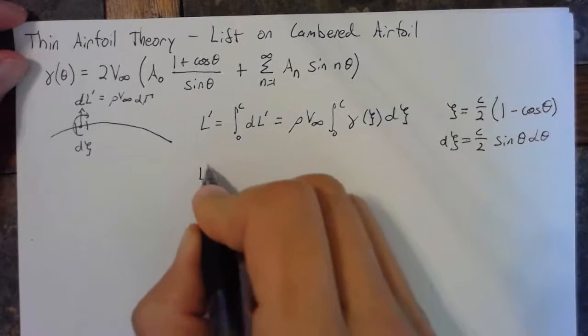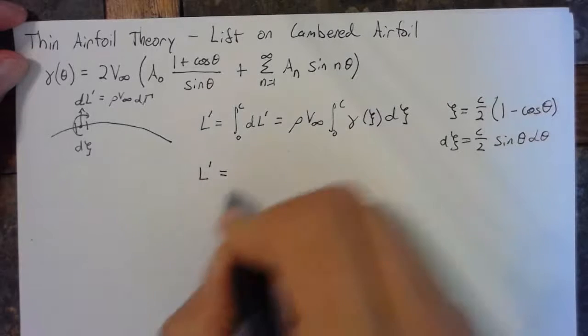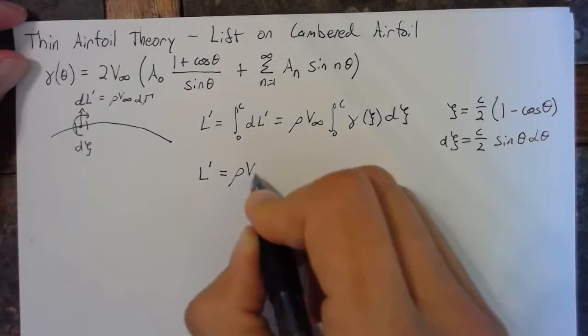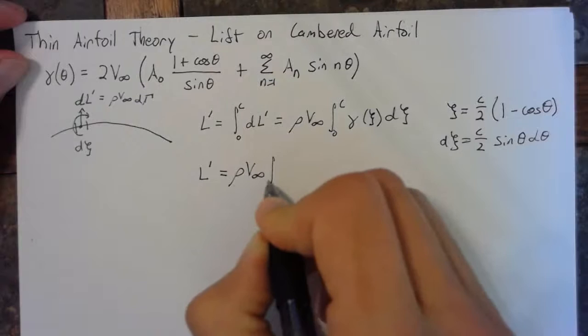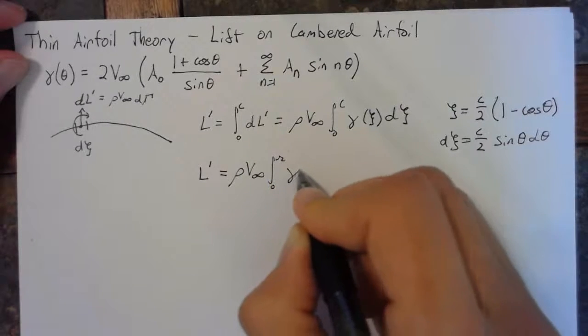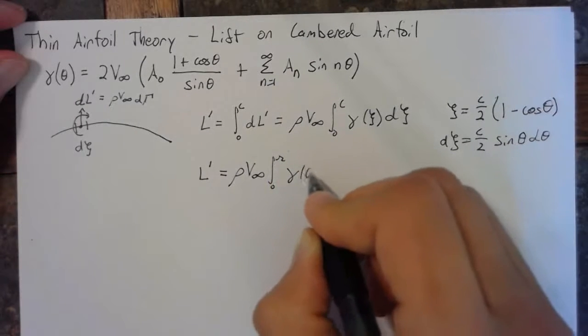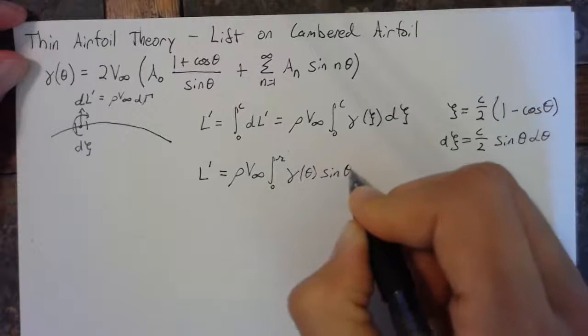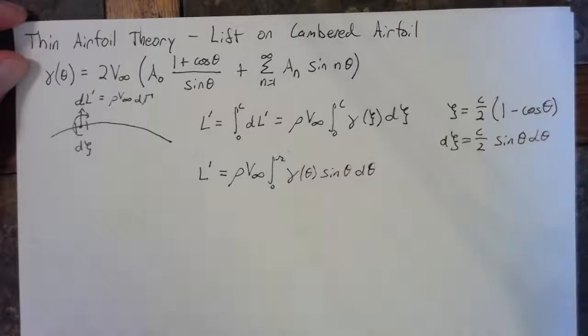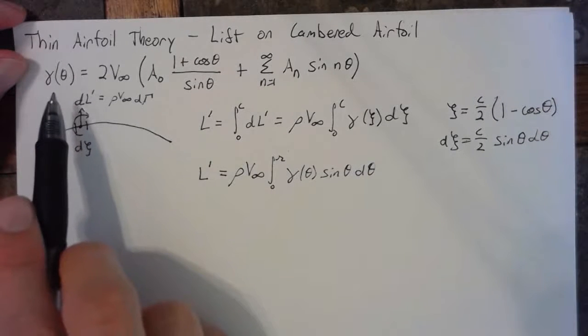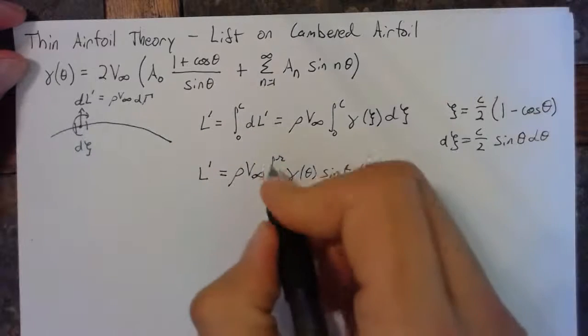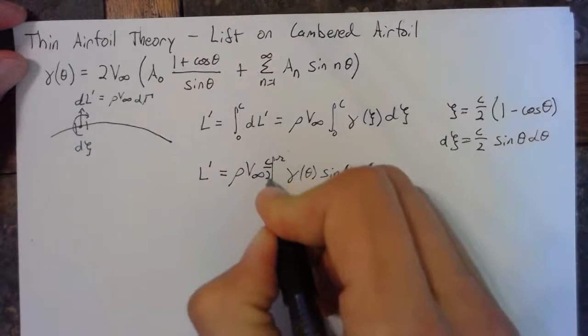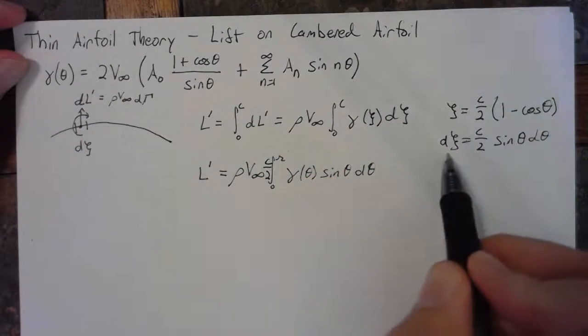And we'll arrive at our lift being equal to rho times v infinity times c over 2 integral from 0 to pi of gamma of theta times sine of theta d theta.